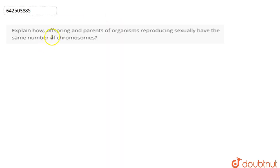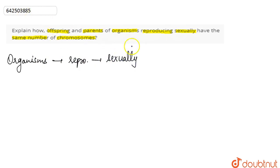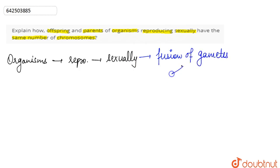In this question, we are asked to explain how the offspring and the parent of organisms reproducing sexually have the same number of chromosomes. In the case of sexual reproduction, the fusion of gametes takes place — the male and the female gametes fuse together to form the zygote.